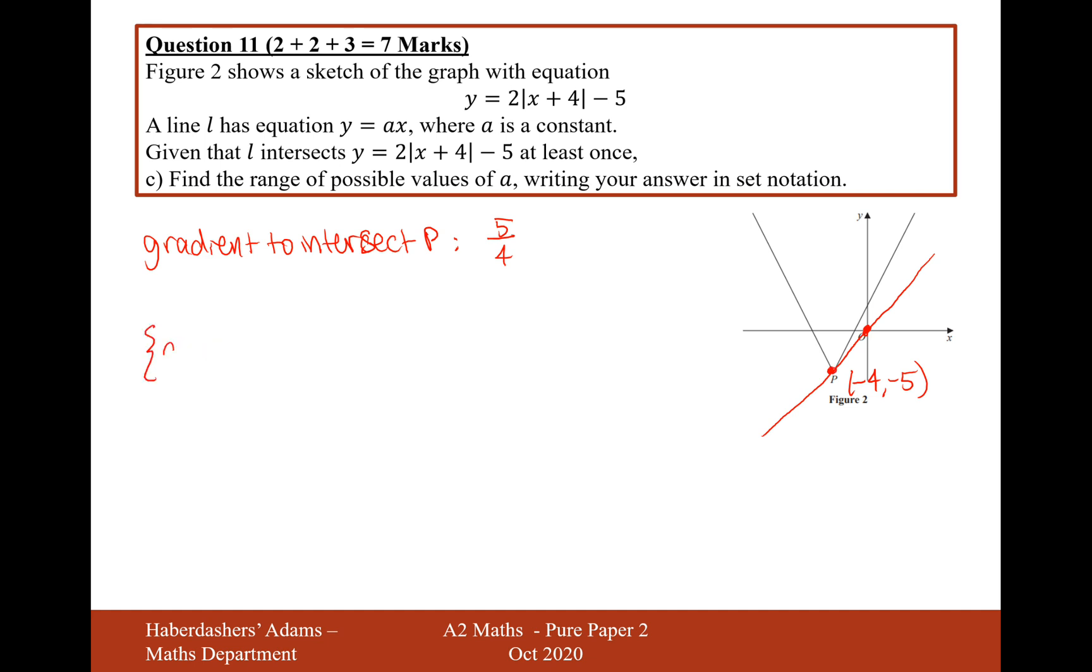So find the possible values of a. It's going to be a is existing in a real set of numbers, and such that a is going to be less than or equal to 5 over 4. If it's equal to 5 over 4, then it will intersect P exactly once, but it's at least once. So if it's anything less than 5 over 4, it would be a shallower gradient or a negative gradient, in which case it would definitely intersect at least once.